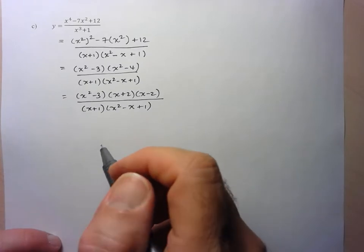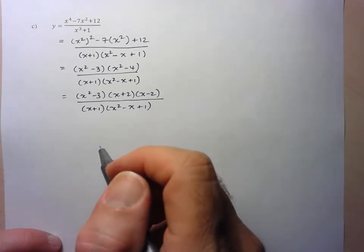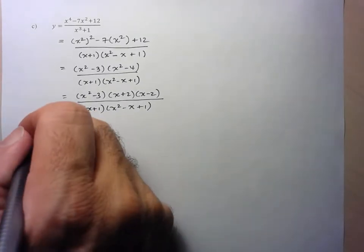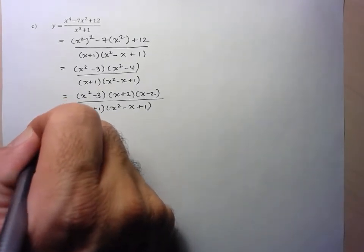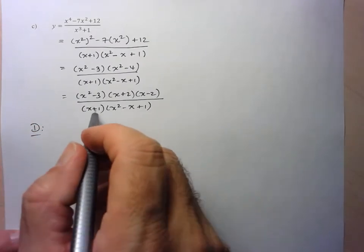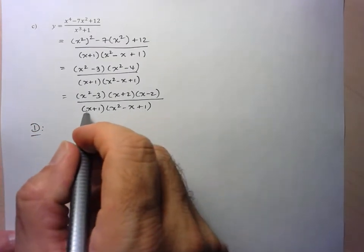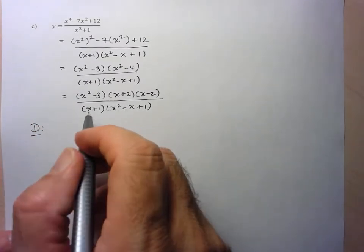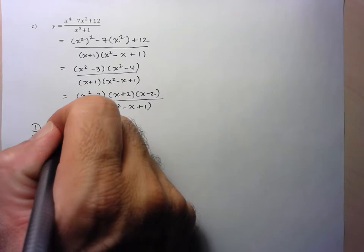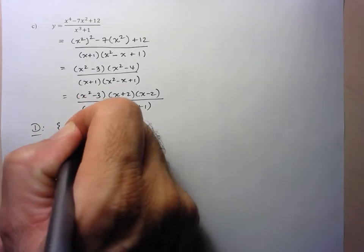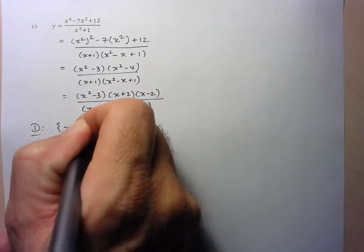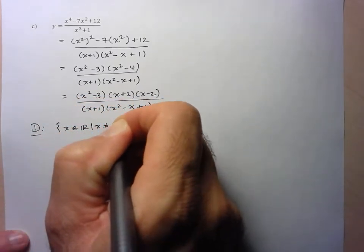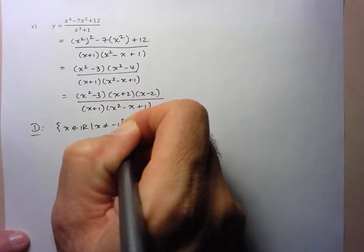Let's start our analysis. Starting with the domain: the only thing that makes the denominator equal to 0 is negative 1. So our domain is all real numbers such that x is not equal to negative 1.